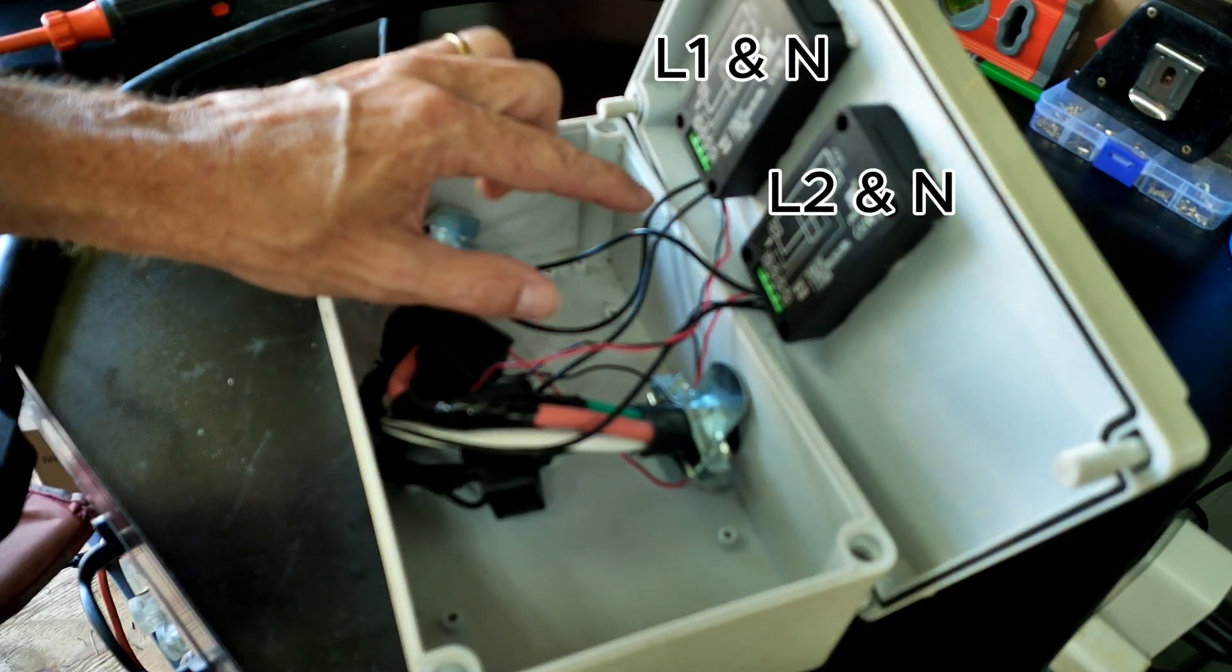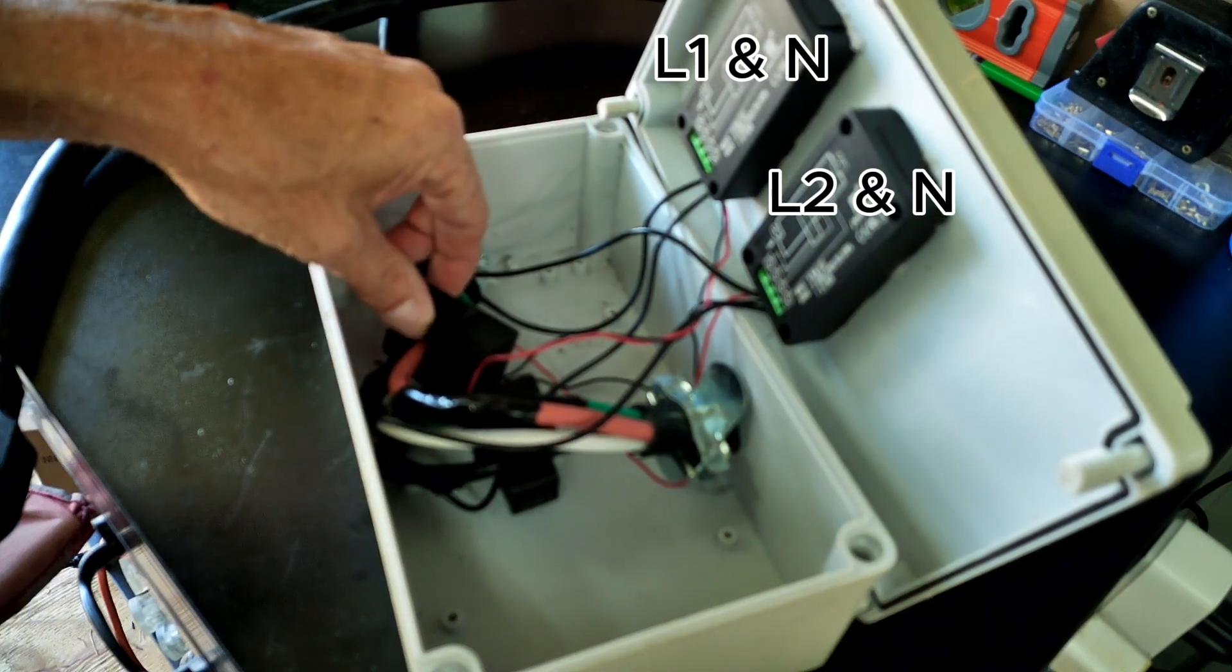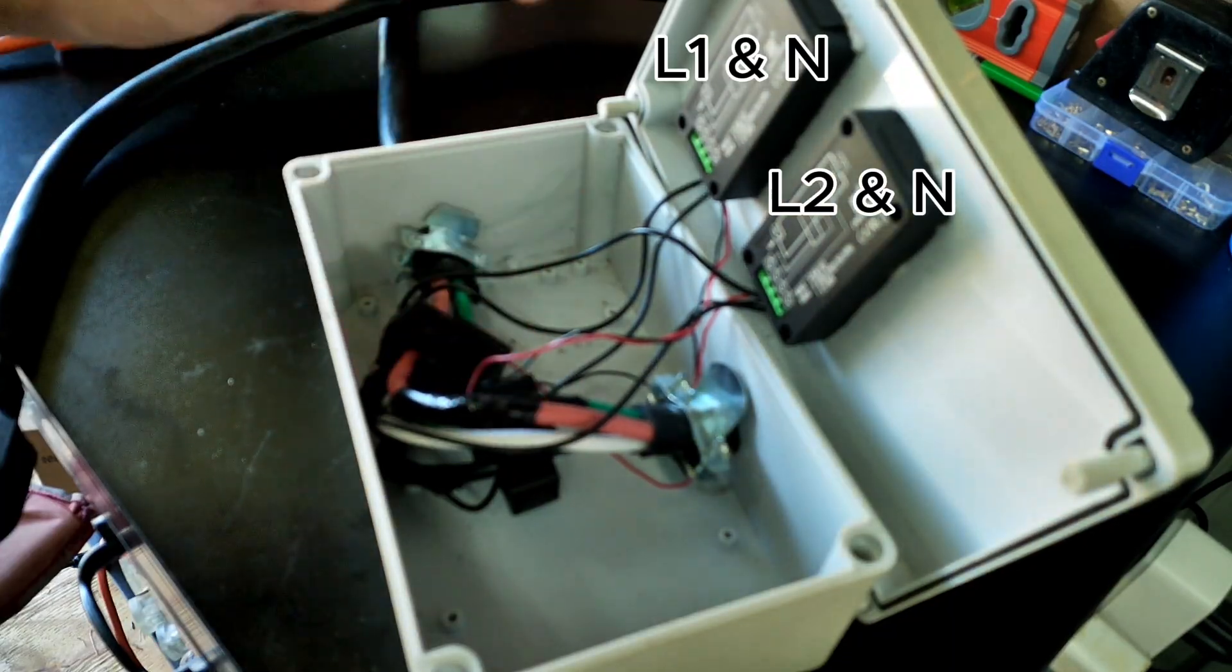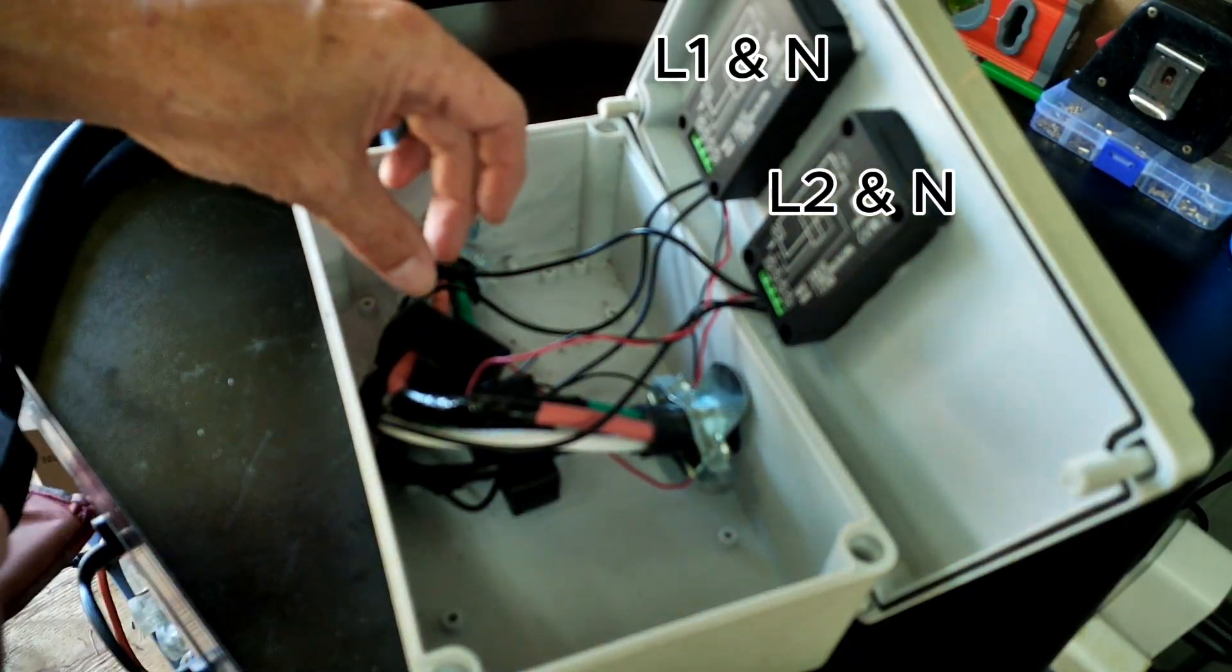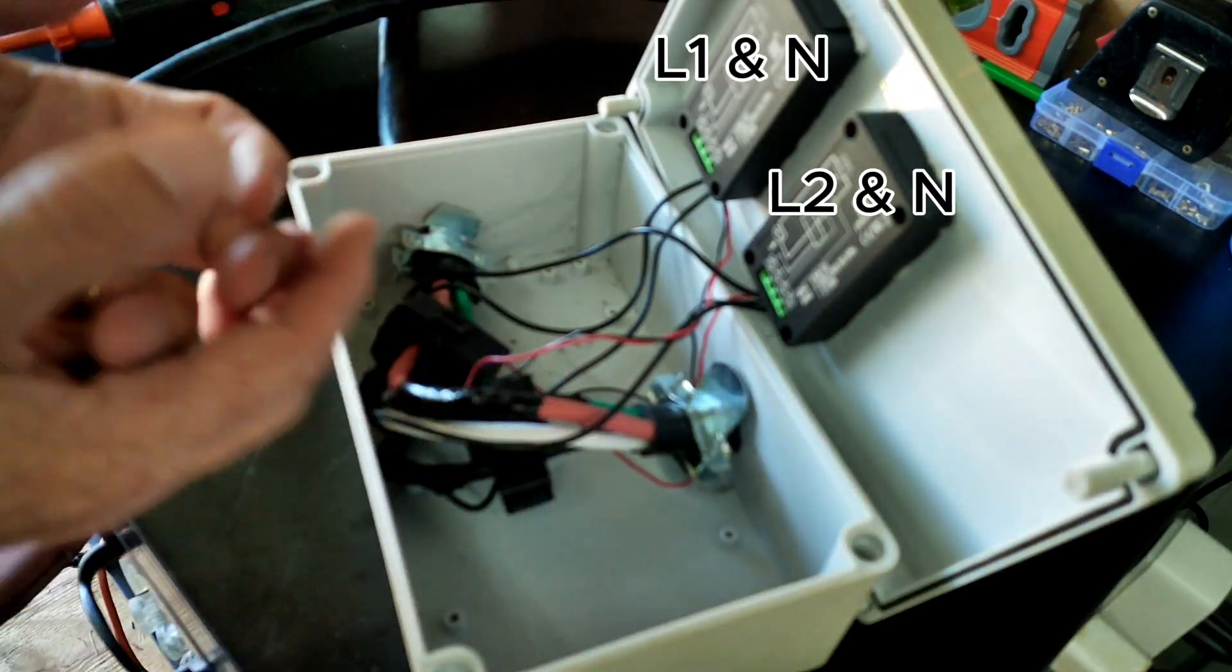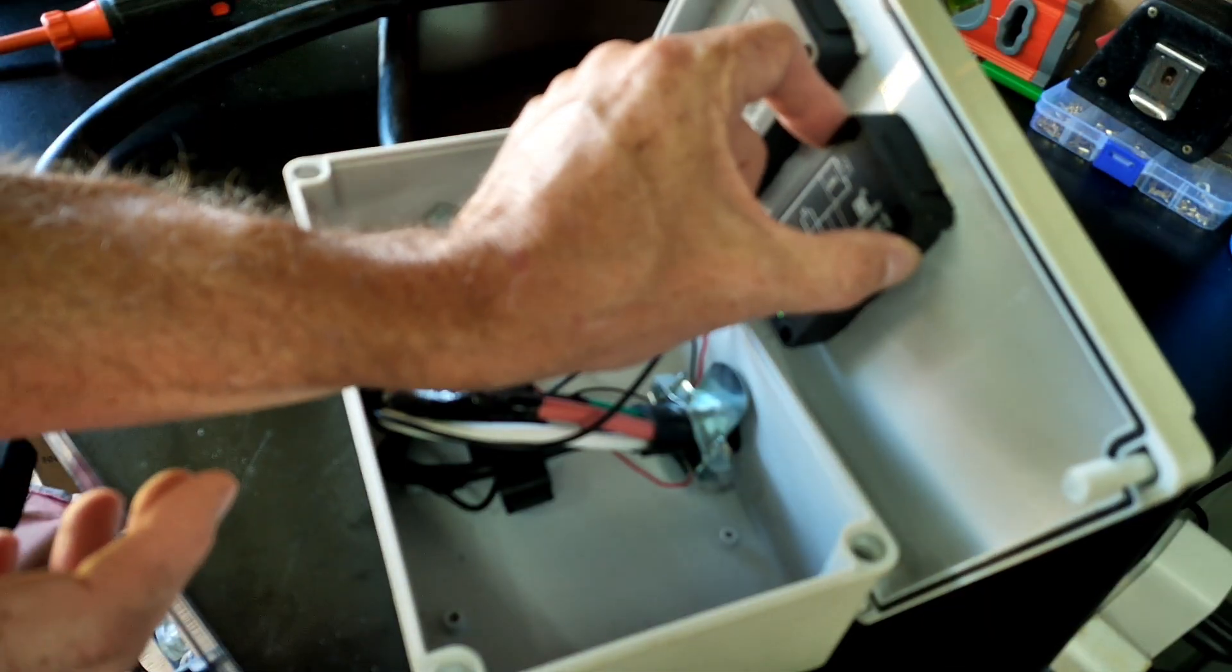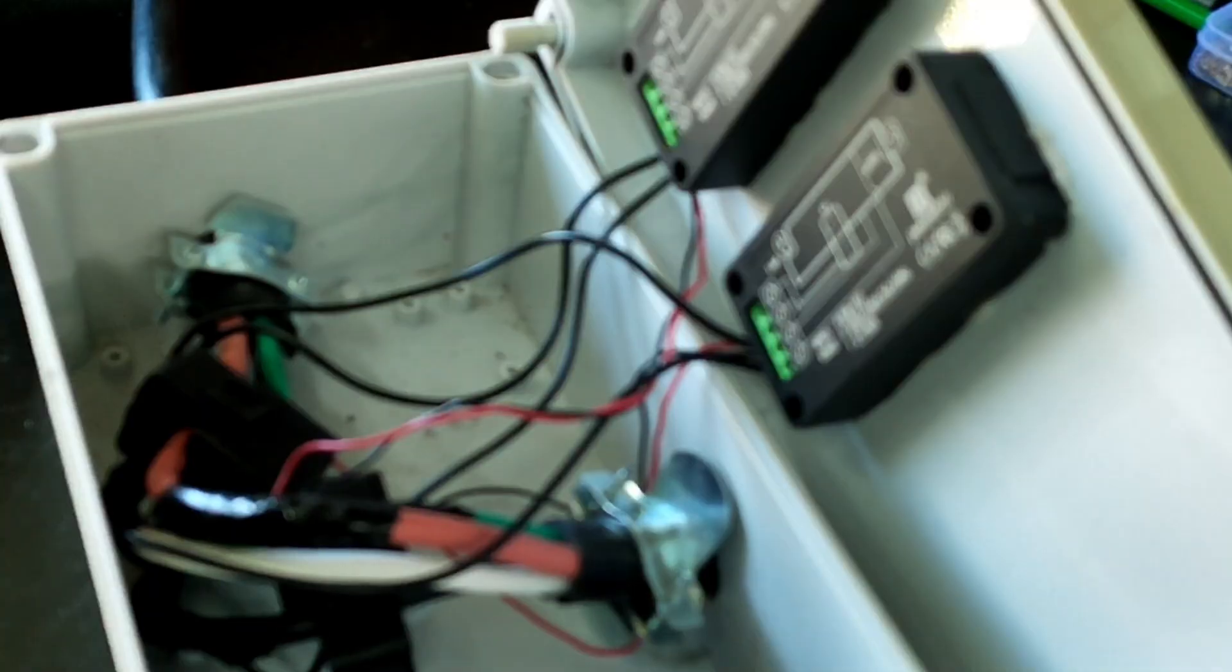Now the smaller wires run to the CT clamp. As you can see, the CT clamps, one runs around L1 and one runs around L2. It's a very simple device. Technically you could take one of these CT clamps and wrap it around both the red and the black wire and have one CT clamp measure both sides. That would cut the cost of your meters in half because you would only need to buy one instead of the two pack that's included in the parts list below.